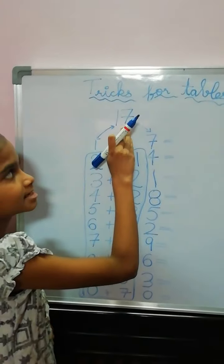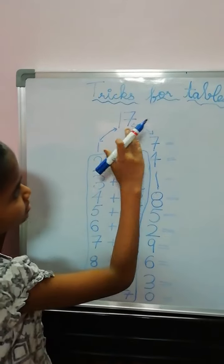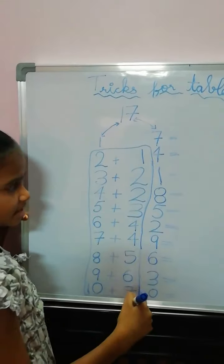And the 1's digit is the 7. So we should write the 7 table this side.